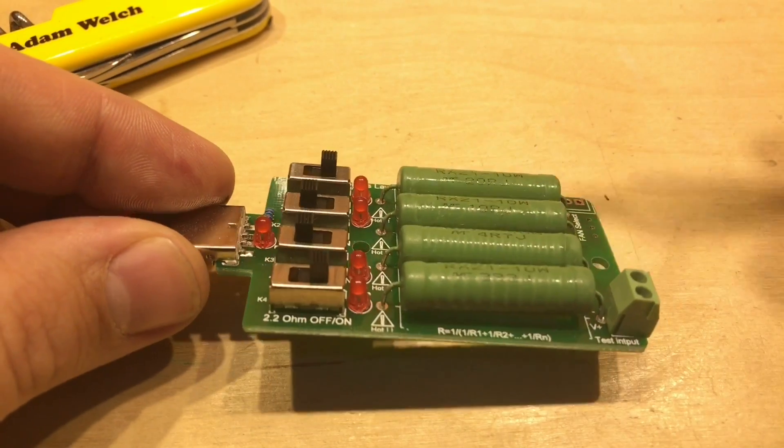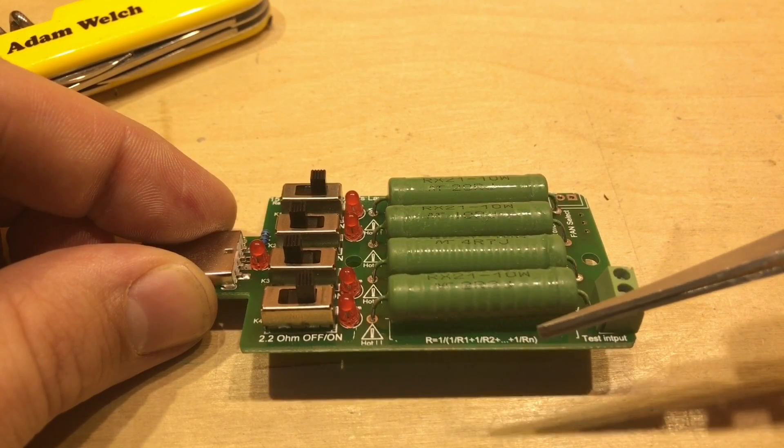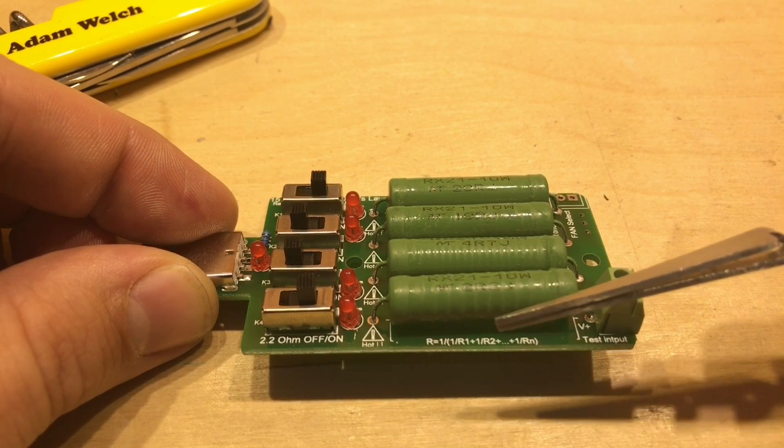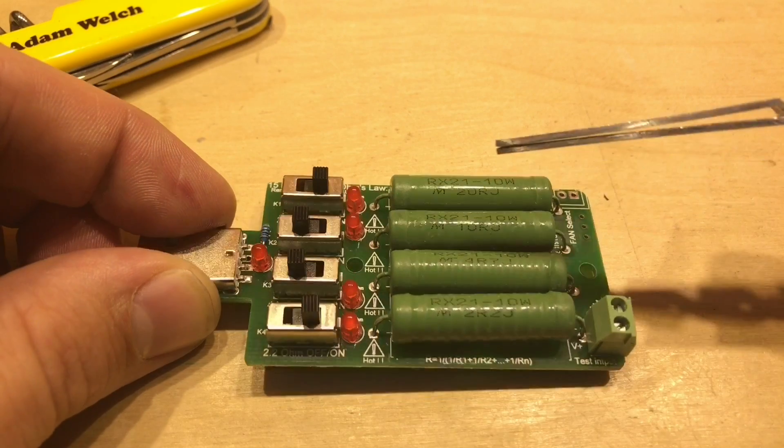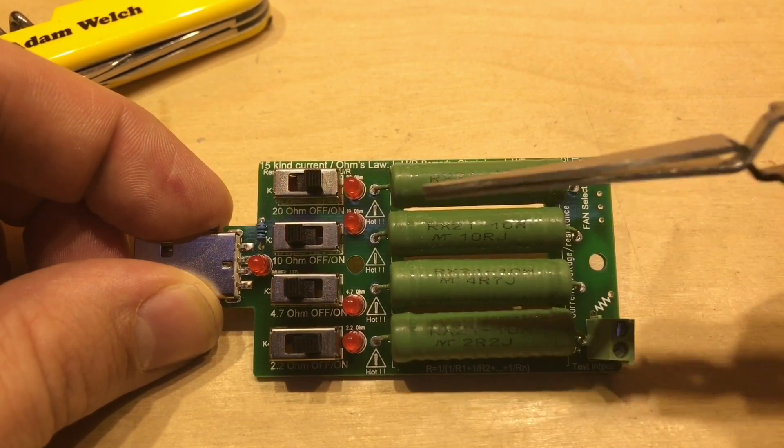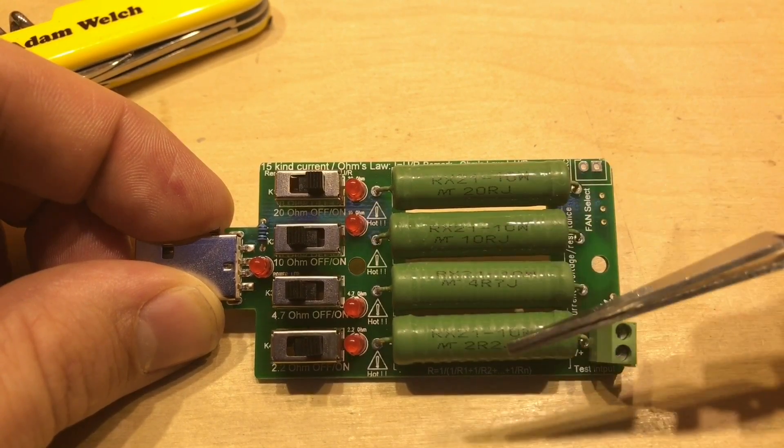And on the bottom here there is also another equation. And this is the equation to work out total resistance when you have resistors of different values in parallel. Because that's what this particular USB load uses. When you switch these resistors on they're switched on in parallel.